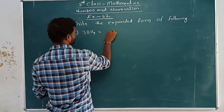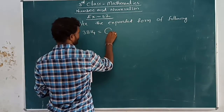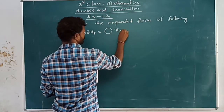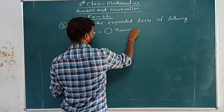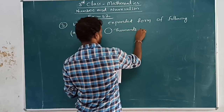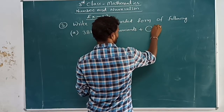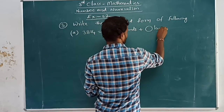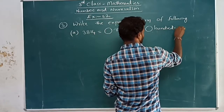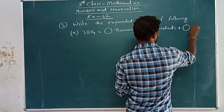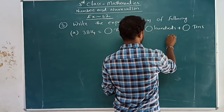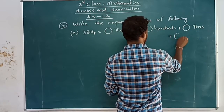In this expanded form, we have to write how many thousands, plus hundreds, plus tens, plus ones.